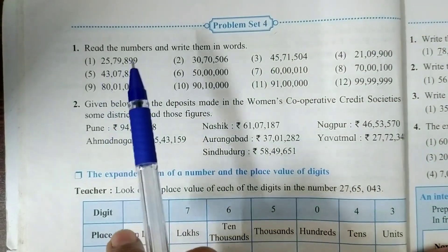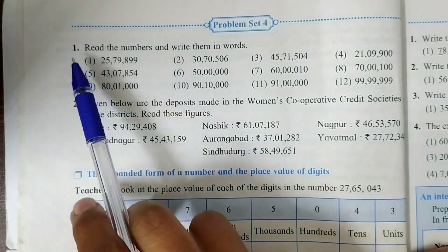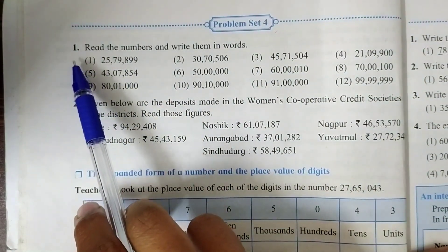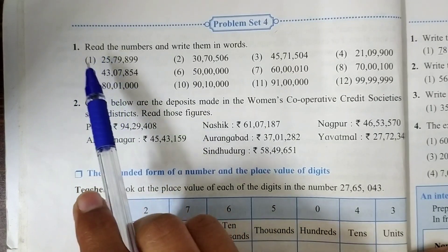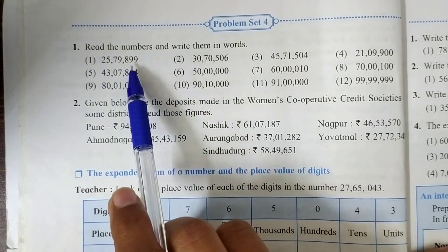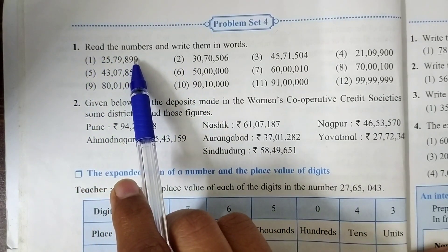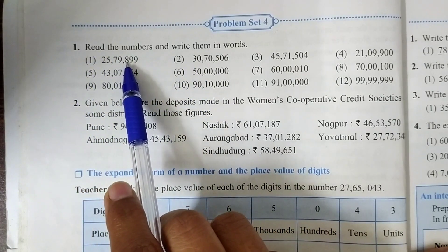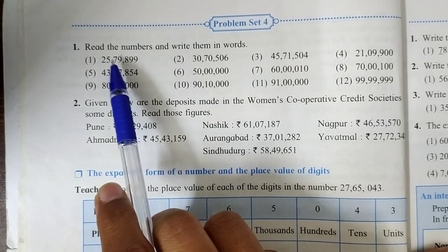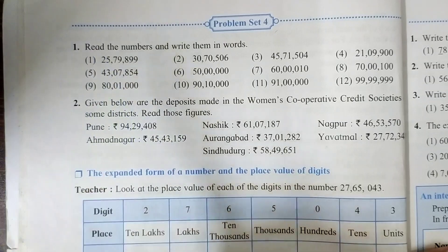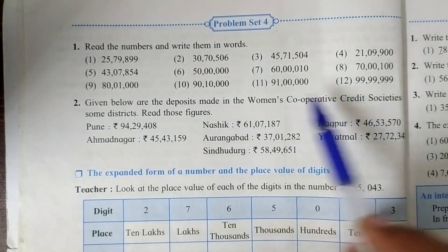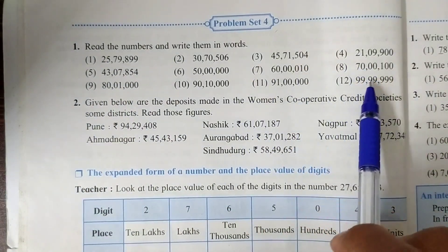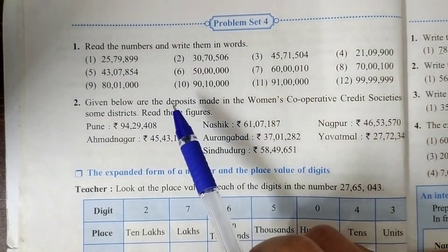If we observe the first question, we see there are 1, 2, 3, 4, 5, 6, 7 digits in each and every number.